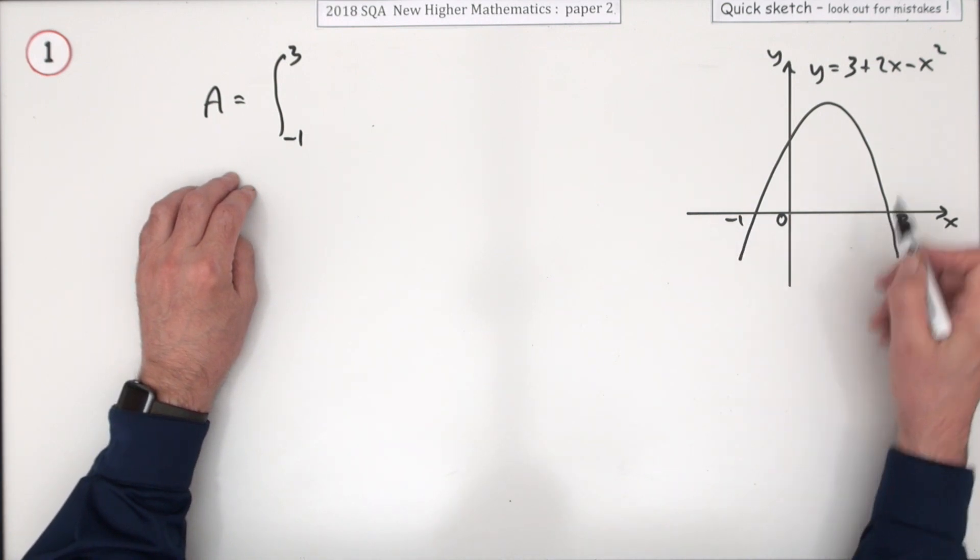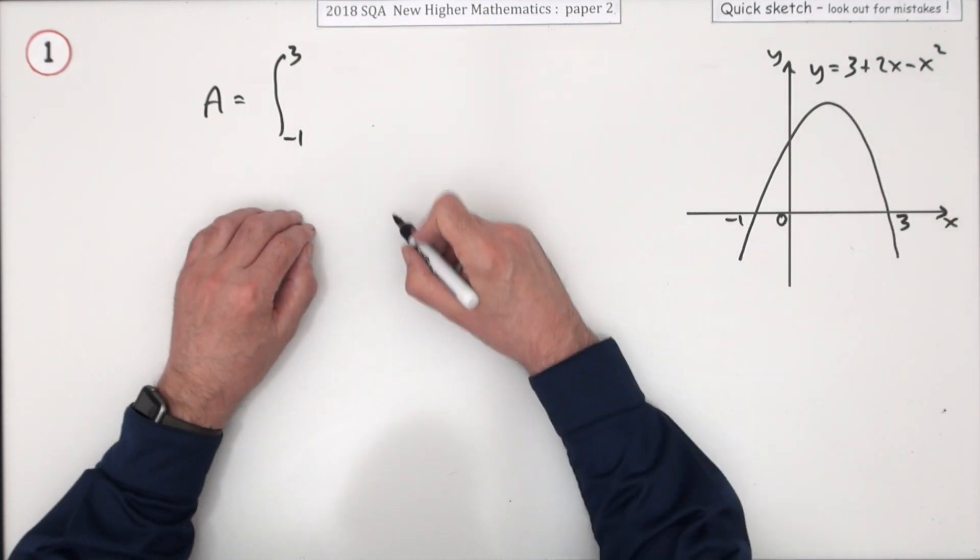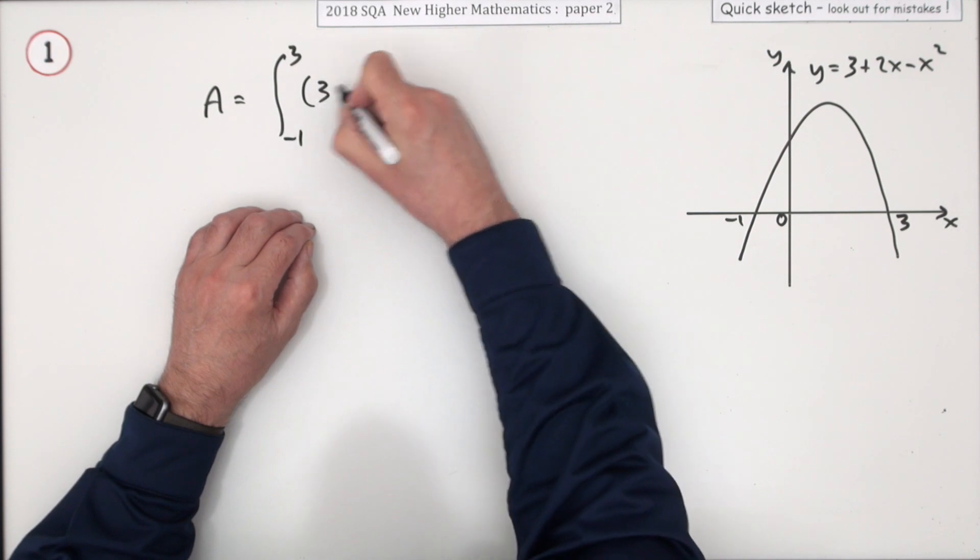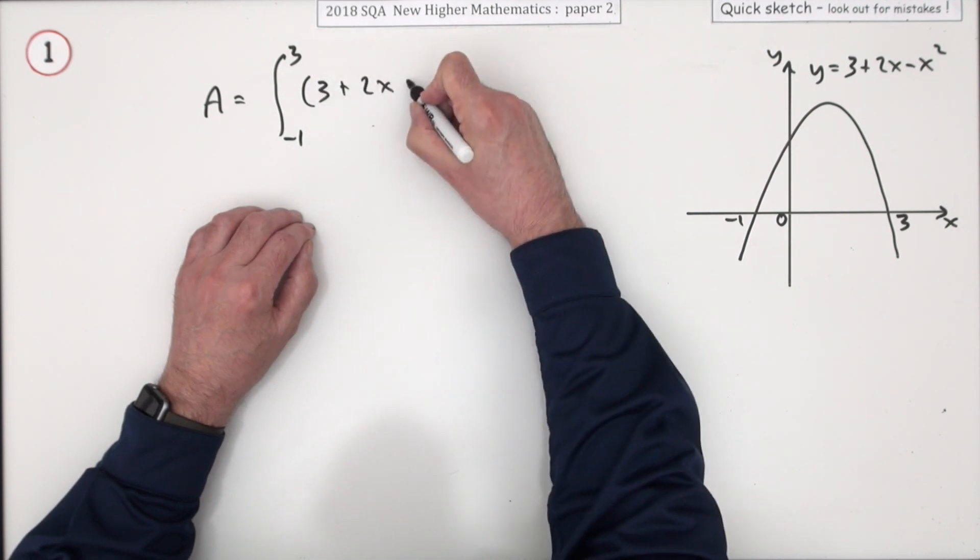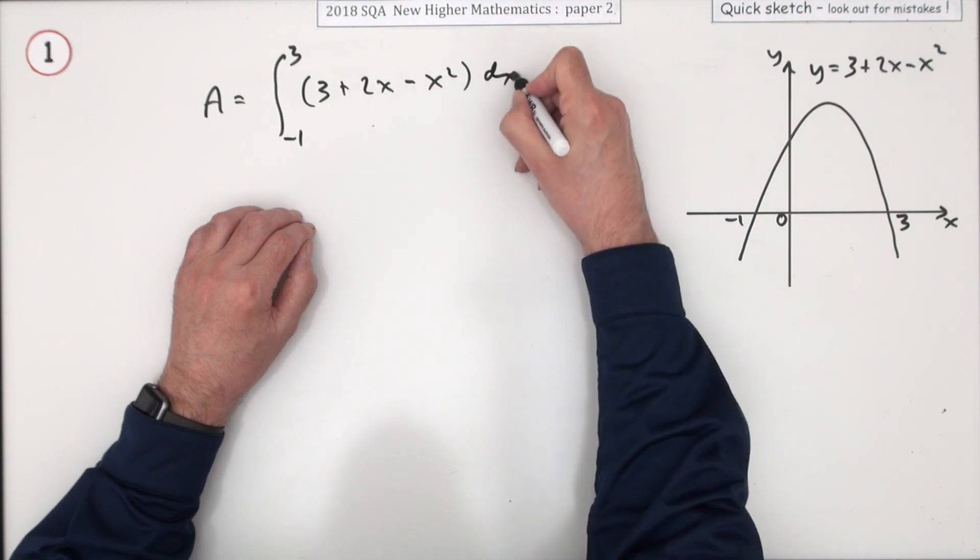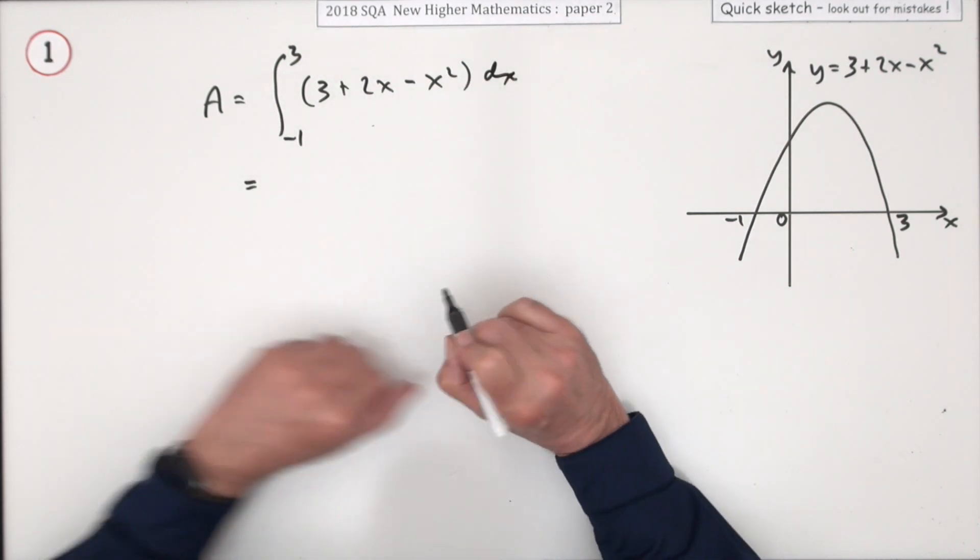I didn't even need to work them out by having to factorize that equal to zero. Of 3 plus 2x minus x squared. And don't forget the dx. I'm pretty sure they'll be looking for that dx in there. That's always mentioned in the marking scheme.